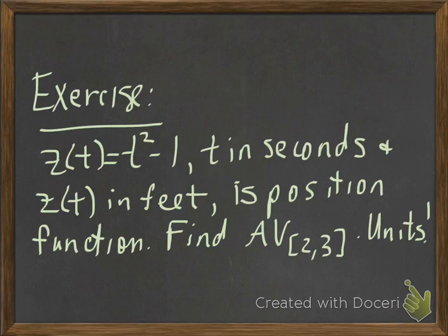Your exercise for this section is z(t) = t² - 1, where t is measured in seconds and z(t) is measured in feet. That's my position function. I want you to find the average velocity on the interval from 2 to 3, and don't forget those units.